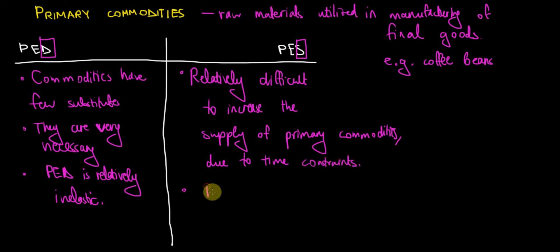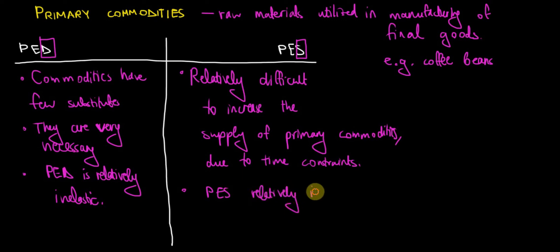We need more time in order to create these commodities due to time constraints. As a conclusion, we can argue that the price elasticity of supply for primary commodities is also relatively inelastic.